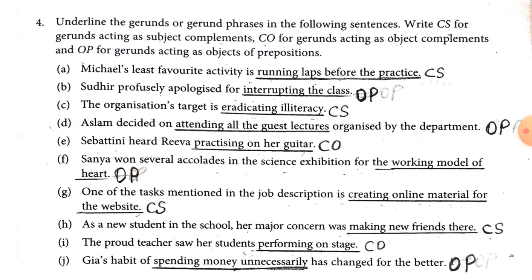Number A: 'Michael's least favorite activity is running laps before the practice.' Here, 'running laps before the practice' is the gerund phrase and it is the subject complement of the subject 'Michael's least favorite activity' — write CS. Number B: 'Should he profusely apologize for interrupting the class?' Here, 'interrupting the class' follows the preposition 'for', so it is object of the preposition — write OP.